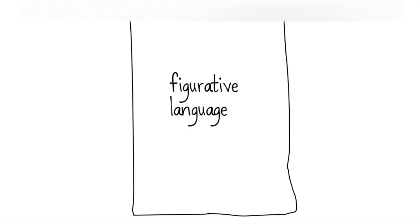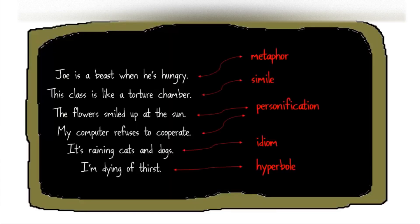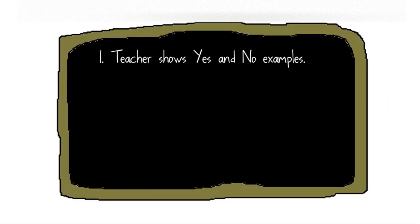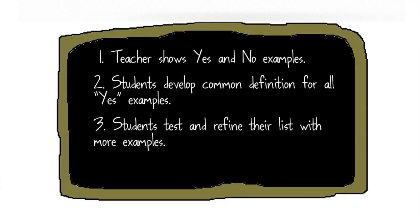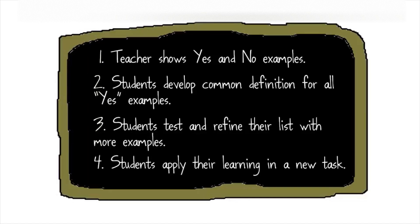At this point, I can spend a few minutes giving students the formal definition for figurative language and the terms for the examples I showed them. Note that I have not included all types of figurative language — I'm not using sound devices like onomatopoeia or alliteration, because I think they stray from the idea of speaking figuratively. I would add those other types once students have a good foundation. So now I've completed my first three steps of concept attainment: yes-no examples, students develop a definition, and then they test and refine their definition. The final step is to have students apply their learning in a new task.